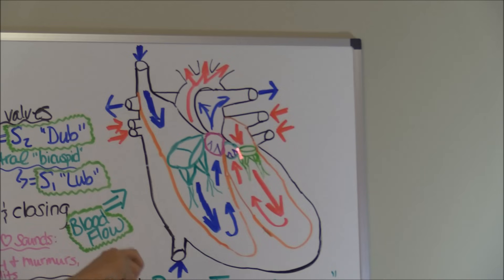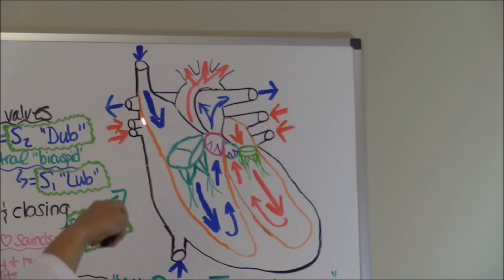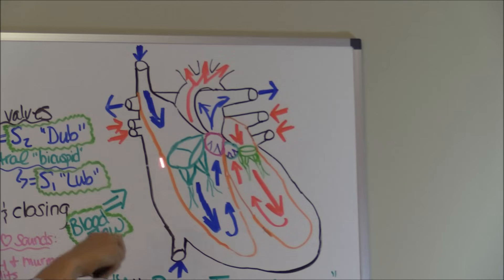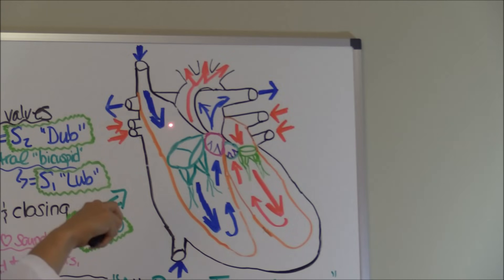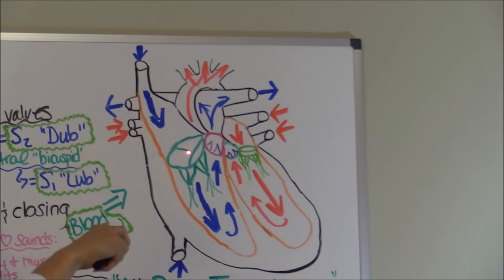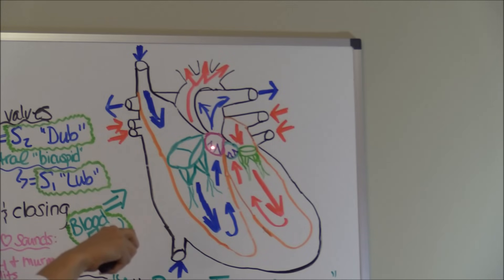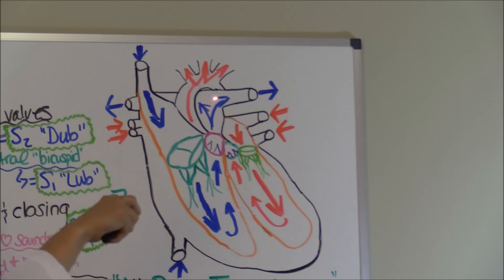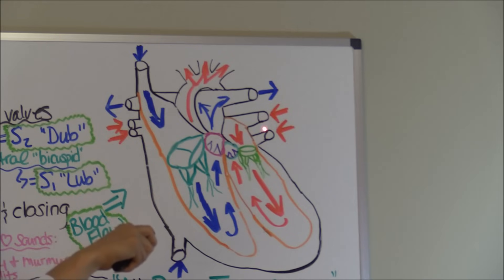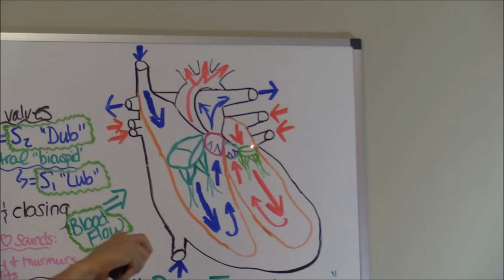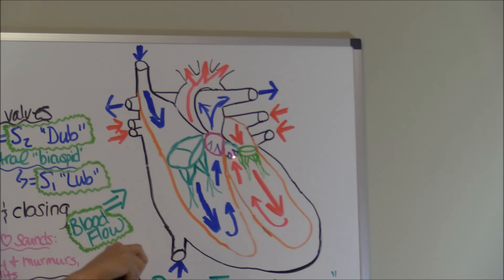Let's cover some basic anatomy of the heart. You have your superior and inferior vena cava, your right atrium, tricuspid valve, right ventricle, then your pulmonic valve and pulmonary artery. Then you have the pulmonary vein, left atrium, bicuspid valve, left ventricle, aortic valve, and then the aorta.